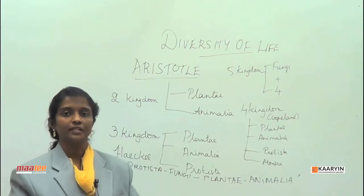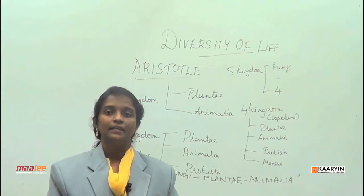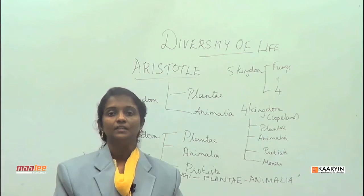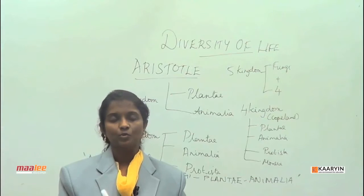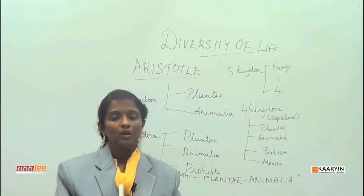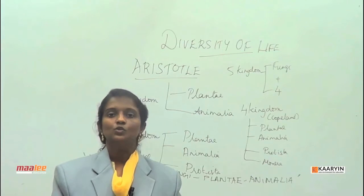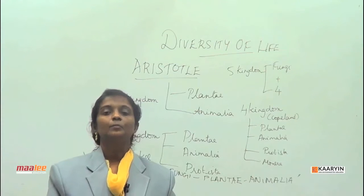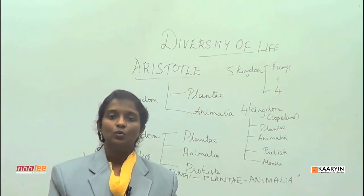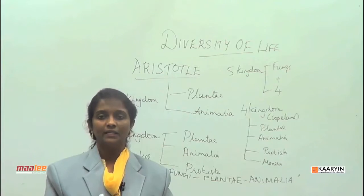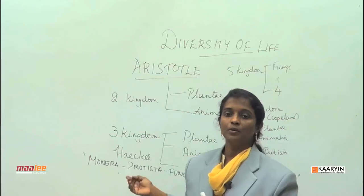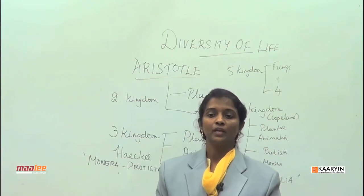Prokaryotic means false nucleus — prokaryotes neither have a nuclear membrane nor nucleoplasm; the genetic material is embedded directly in the cytoplasm or protoplasm. They do not have a double-walled nuclear membrane, hence they are called prokaryotes. Prokaryotes include mostly the least complex bacteria, and autotrophic and heterotrophic bacteria are the pioneers of this earth. This brings us to kingdom Monera.